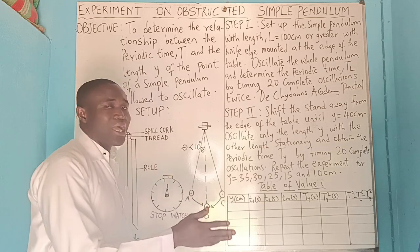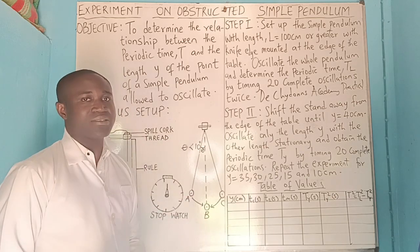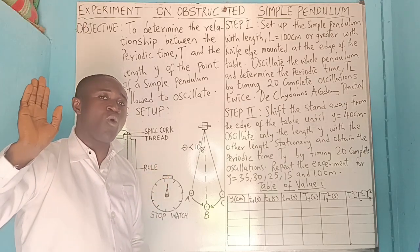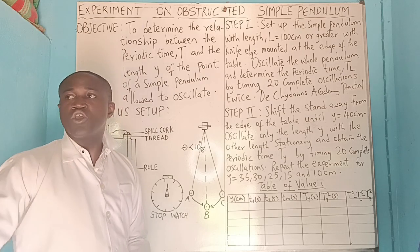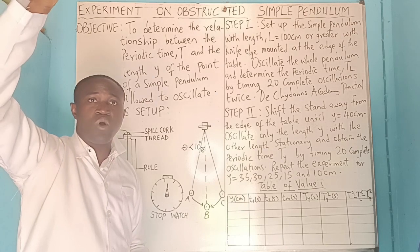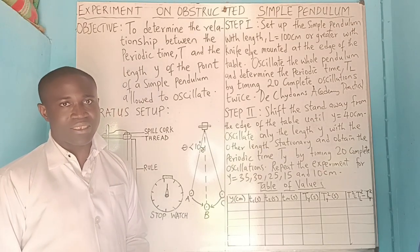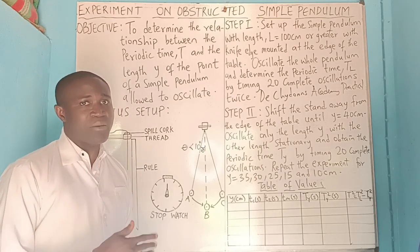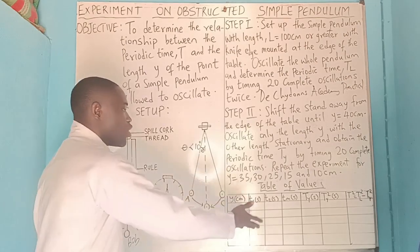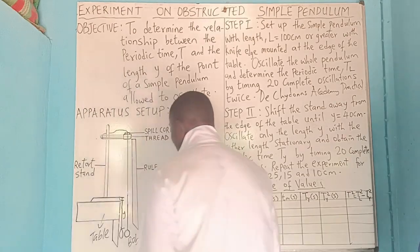Another precaution you can talk about in this experiment is that the doors and windows and electric fans should be switched off. You close your windows, lock your door, switch off the electric fan so as to reduce air resistance. Once the air is interfering in the experiment, it will affect the time you are to get for your result.